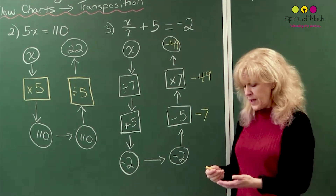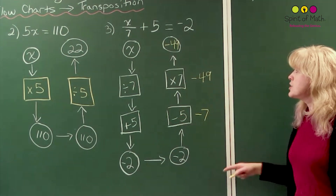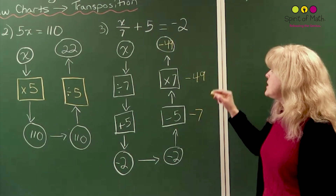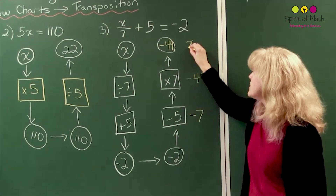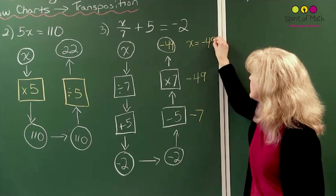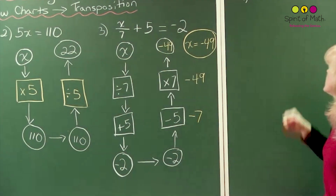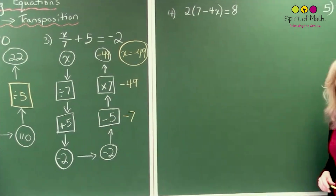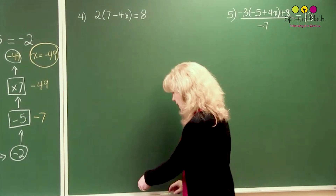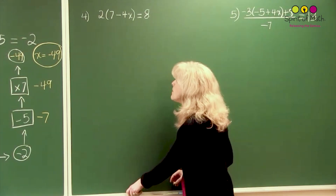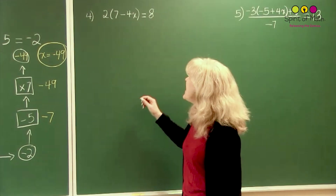In all of these, you're going to be doing these types of charts. At the end, you indicate that x equals negative 49 and write it out like that. Let's go to the next one — this one includes another step. I'm going to write a little smaller, but hopefully you can still see it well.